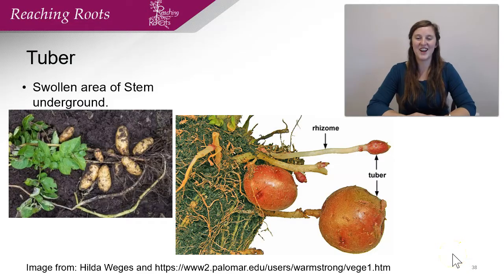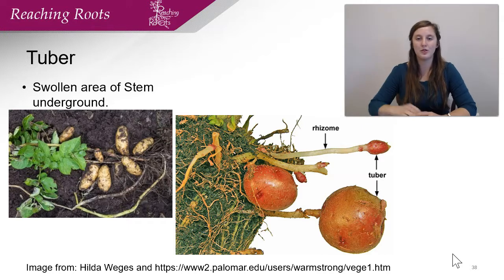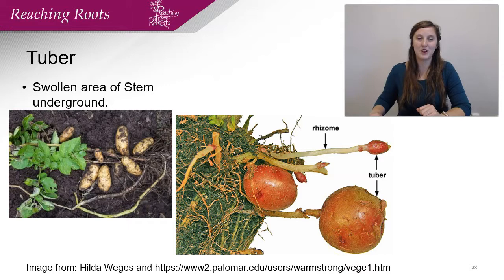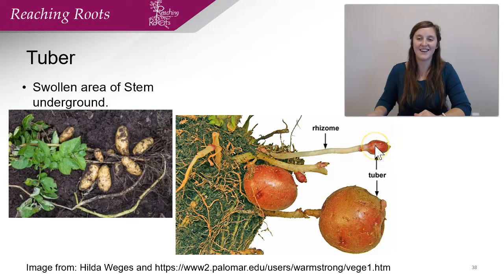The next one we'll go over is a tuber. You're all familiar with a tuber because you've probably eaten potatoes. Potatoes are an example of a tuber, which is a swollen area of a stem that's underground. We know it's a stem because it has buds — roots do not have buds. These are called eyes on a potato. Each individual eye or bud is capable of producing a new potato plant. This is a way that potatoes can reproduce asexually, which does not include a flower. The potato forms because of a rhizome, and where the tuber is going to form is a swollen area. Potatoes are important for plants for storing nutrients for the next season. We harvest these for eating and it's a valuable food source for many humans around the world.